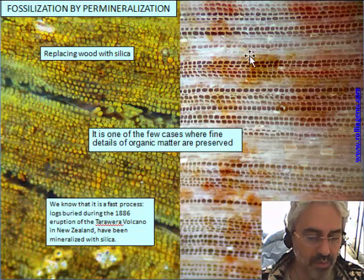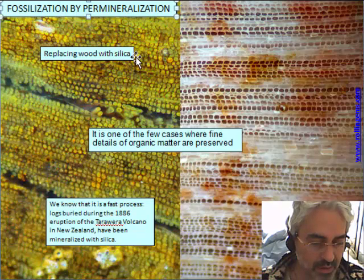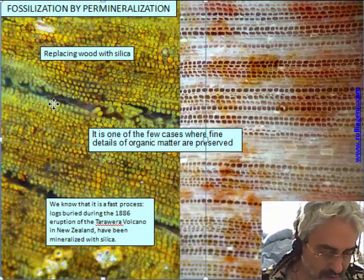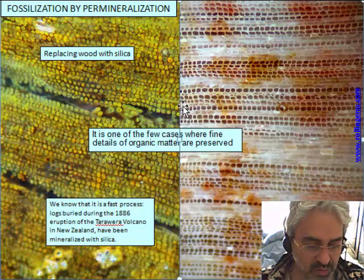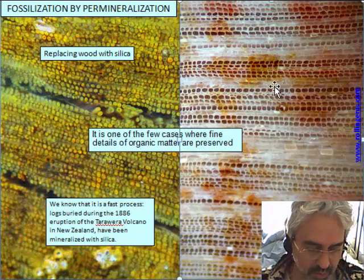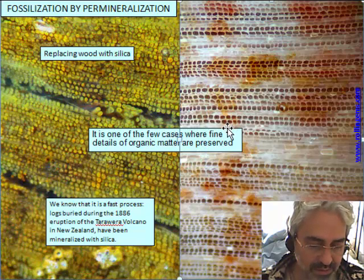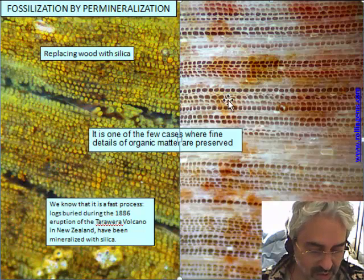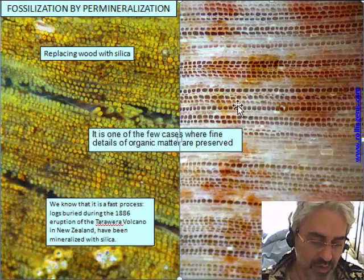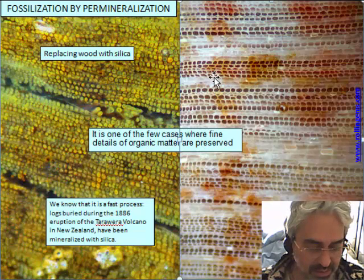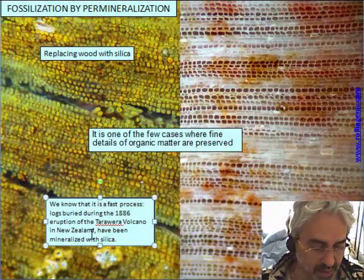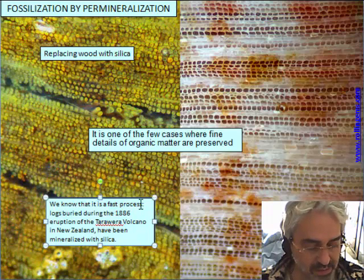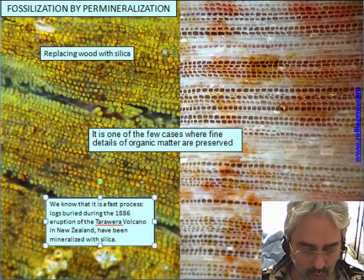Now we will talk about permineralization — the replacing by silica of wood. In macro photos of fossil wood, we can see that every small detail of the wood is preserved, including the cell structure. These woods are very old. This is one of the few cases where it is possible to see fossil detail of organic matter, and this process occurs only with silica. We know the process is quite fast because in logs buried in 1886 in New Zealand, some wood was already mineralized with silica.